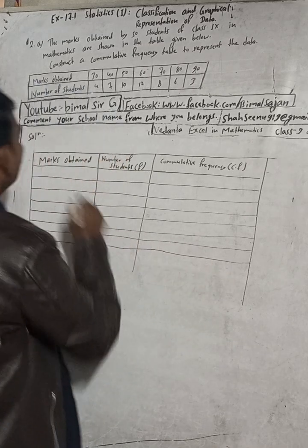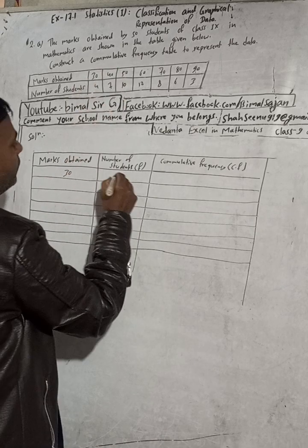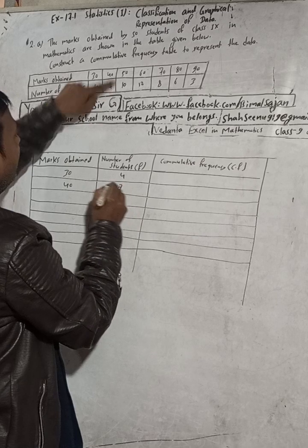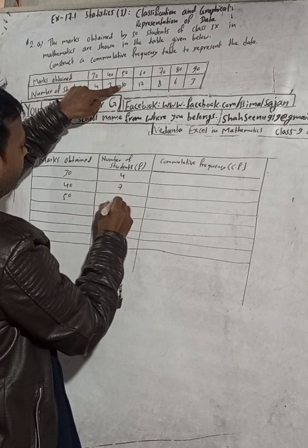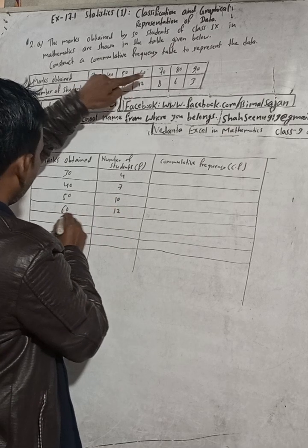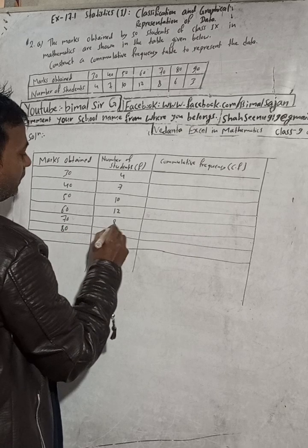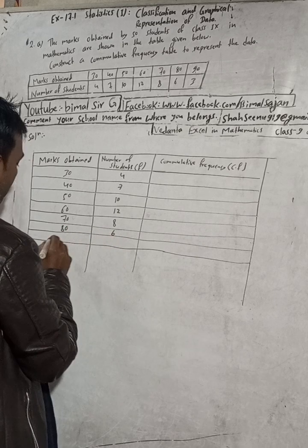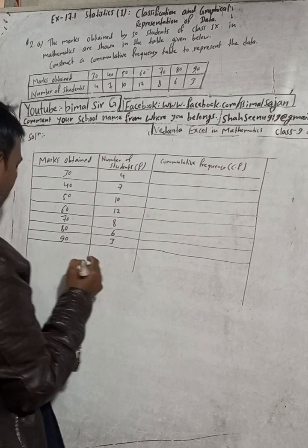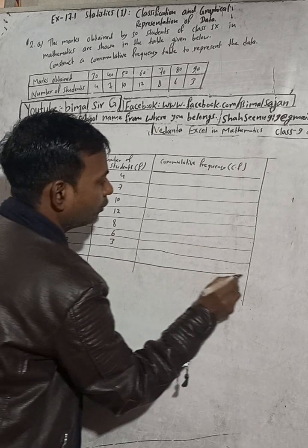Marks obtained: 30 marks by 4 students, 40 marks by 7 students, 50 marks by 10 students, 60 marks by 12 students, 70 marks by 8 students, 80 marks by 6 students, and 90 marks by 3 students. When you add this you will get 50.